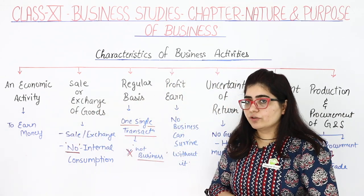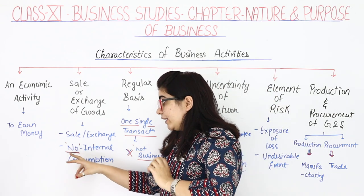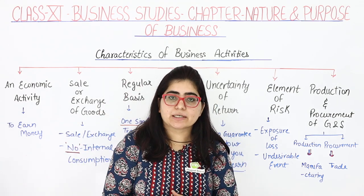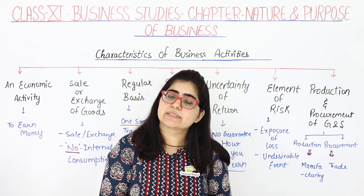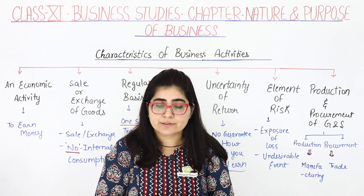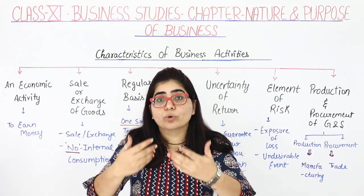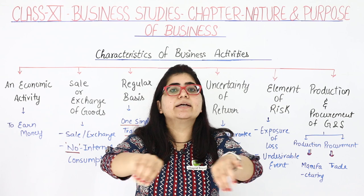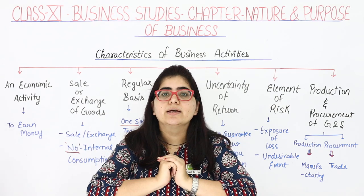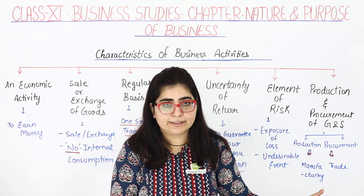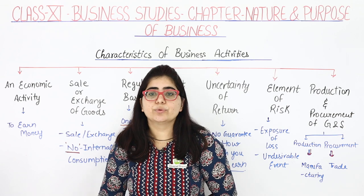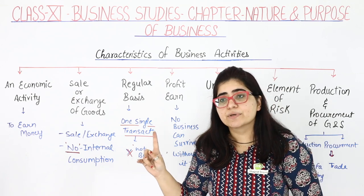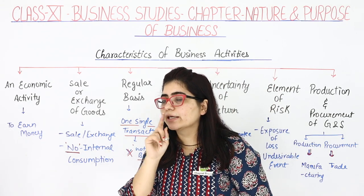Second characteristic is sale or exchange of goods. I have written: no internal consumption. For example, I made cookies and distributed them to my family members and they ate them — I did not sell them. That was internally consumed. Since there was no sale or exchange, this will not be called a business activity. For an activity to be called a business activity, goods must be sold or exchanged; otherwise, internal consumption does not count as a business activity.